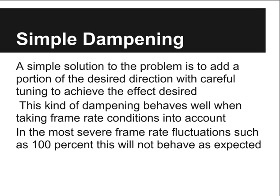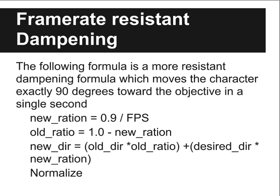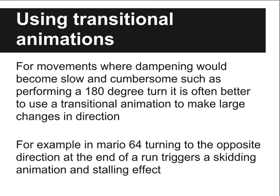It is fairly robust if we account for frame rate fluctuations, but at 100% frame rate fluctuations it behaves unpredictably. Below is an improved dampening formula which turns the character 90 degrees towards the objective in a single second, no matter what the frame rate fluctuation may be. For a greater change in direction such as a full 180 degree turn, a transitional animation should be used instead of dampening.